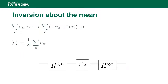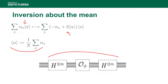Combined with the Hadamard gates, this gives us what we call inversion about the mean. If you have a state as input, it transforms it such that every coefficient is replaced by two times the average alpha minus that coefficient. So the action replaces every coefficient by 2α minus that coefficient. The proof of this is in the class notes.